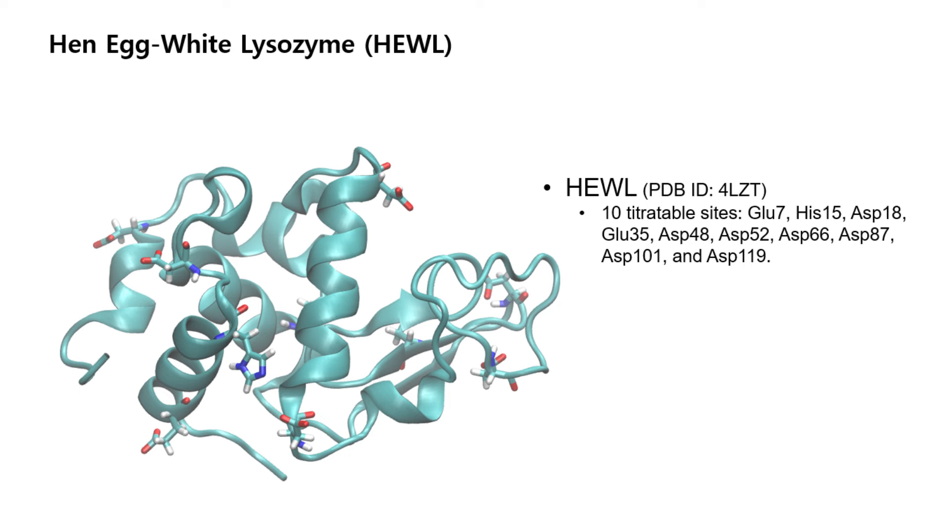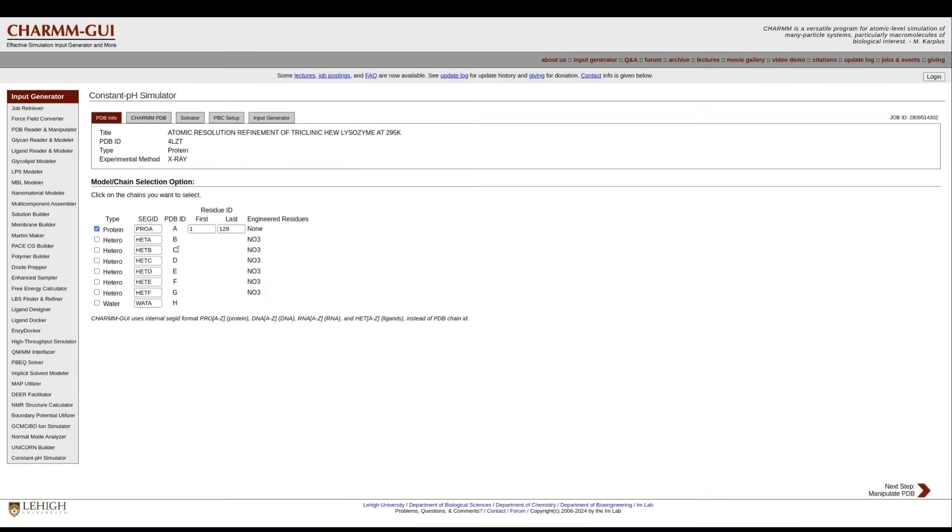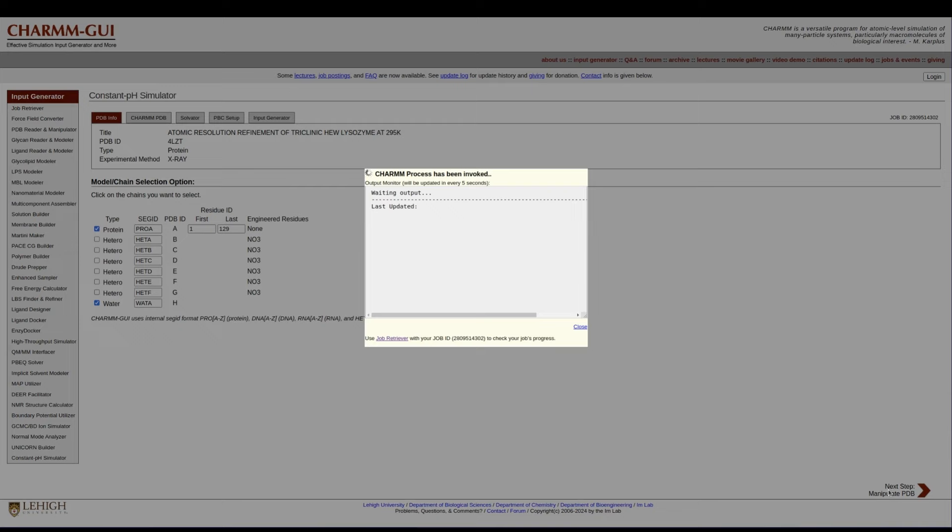To begin, go to CPHMD simulator, type the PDB ID 4LZT, and click Next. We want to include the protein and crystal water, and click Next.